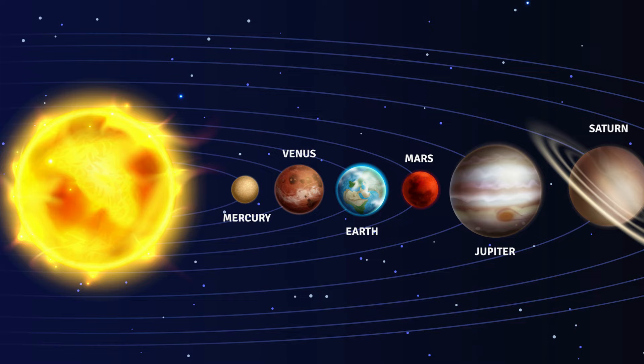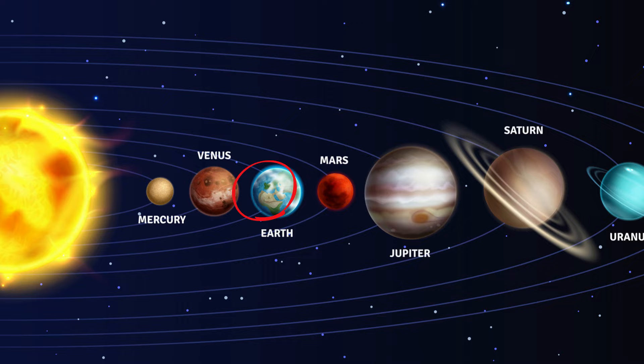The eight planets in order from the sun are Mercury, Venus, Earth, Mars, Jupiter, Saturn, Uranus, and Neptune.